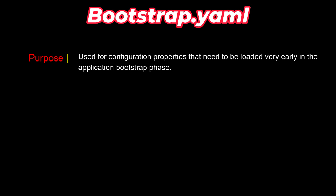In bootstrap.yml we place properties such as the application name, Eureka server details like the port or URL where Eureka is running, and if we are using a config server, the URL on which that config server application is running. All these things are needed before the application context initialization.